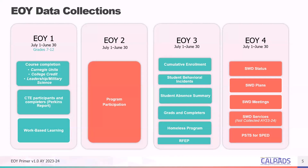EOY 1 contains course completion information, including Carnegie units and college credits earned, as well as leadership and military science course completions. EOY 1 also contains the CTE participant and completer information and the Work-Based Learning or WBLR file.